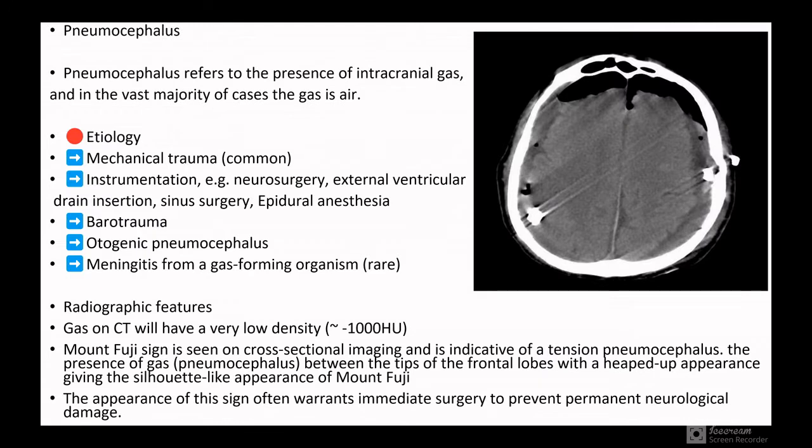Coming to pointer three, it is pneumocephalus. This is the CT of brain. What is pneumocephalus? It is the presence of intracranial gas - in the vast majority of cases the gas is air. Etiology can be mechanical trauma or instrumentation like neurosurgery, extraventricular drain insertion, sinus surgery, or epidural anesthesia. Barotrauma also can cause it, and it can be iatrogenic pneumocephalus, and meningitis from a gas-forming organism, which is very rare.